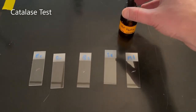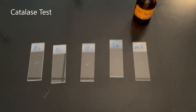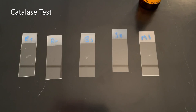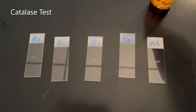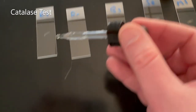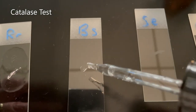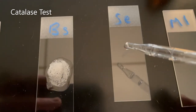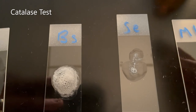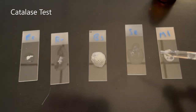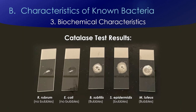For the catalase test, I have five glass slides each labeled with an organism name and a little bacteria smeared onto each. I'm going to add hydrogen peroxide and look for bubbles. Here we go with E. coli — no bubbles. Here we go with Rhodospirillum — no bubbles. Bacillus subtilis — lots of bubbles, so positive. Staphylococcus aureus — also positive. Micrococcus luteus — also positive. Here is a photograph of the catalase test results as well.